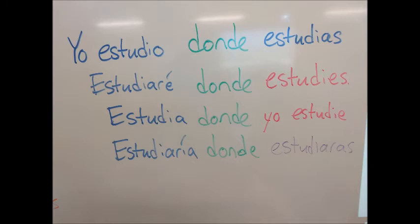Here are some more examples with the word 'donde.' The first sentence, once again, is in the present tense indicative, so it stays in the present tense indicative the whole time: 'I study where you study.' This is something that we do repeatedly. But if we go to the future tense — 'I will study where you study' — we don't know where you are studying yet, and so it's in the subjunctive.